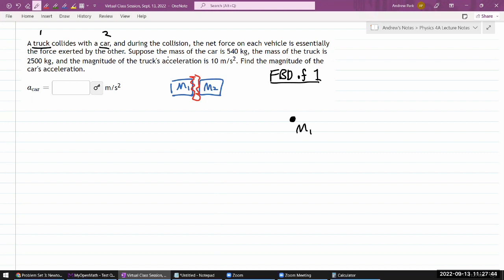And two is the car. So this is going to be my object one, and then I have the free body diagram of two, that's my car. Normally I would have done a lot of thinking about what are the forces on these things, but the question is actually saying the net force on each vehicle is essentially the force exerted by the other.